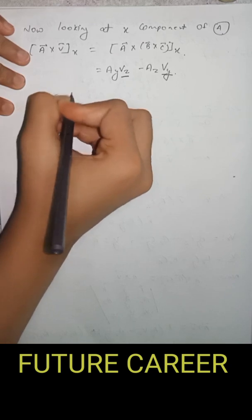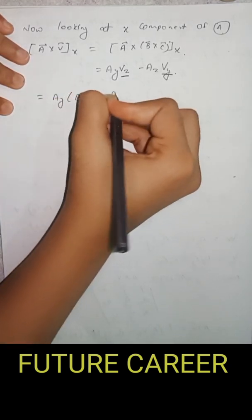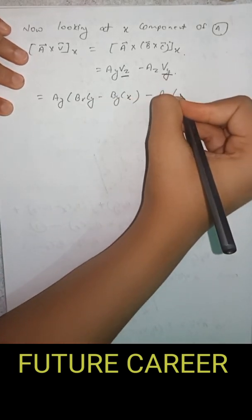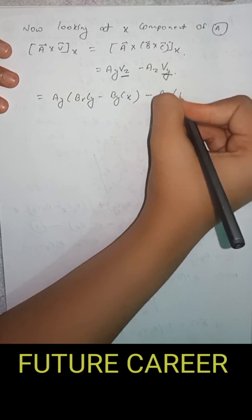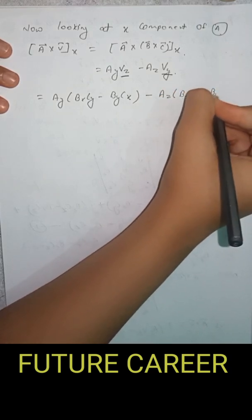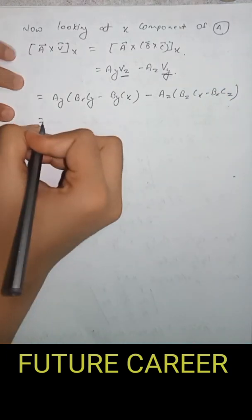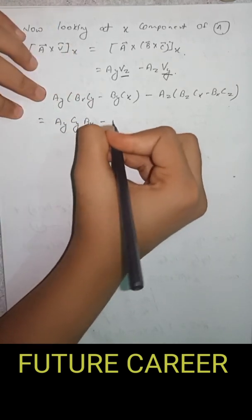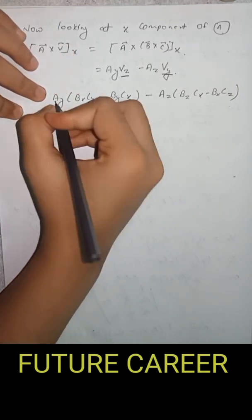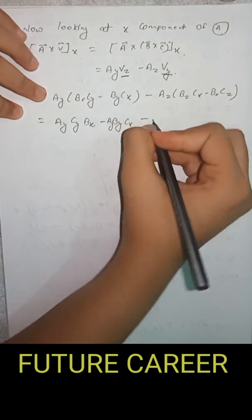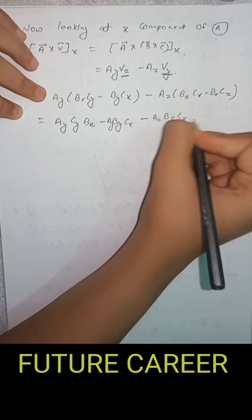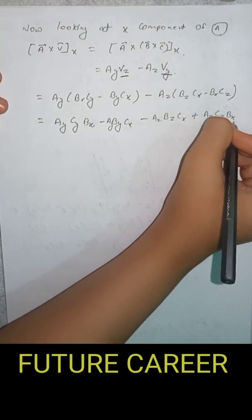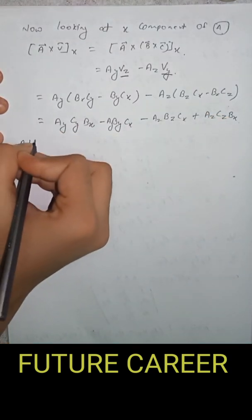Substituting: Ay into Bx Cy minus By Cx, minus Az into Bz Cx minus Bx Cz. Expanding: Ay Cy Bx minus Ay By Cx minus Az Bz Cx plus Az Cz Bx. Now we add and subtract Ax Bx Cx.